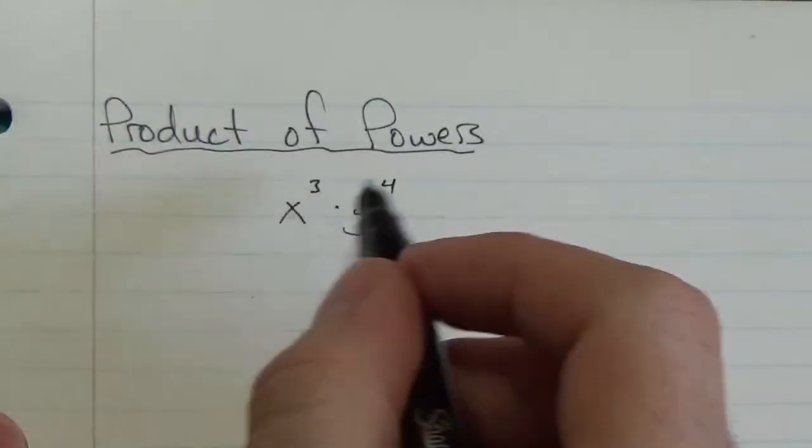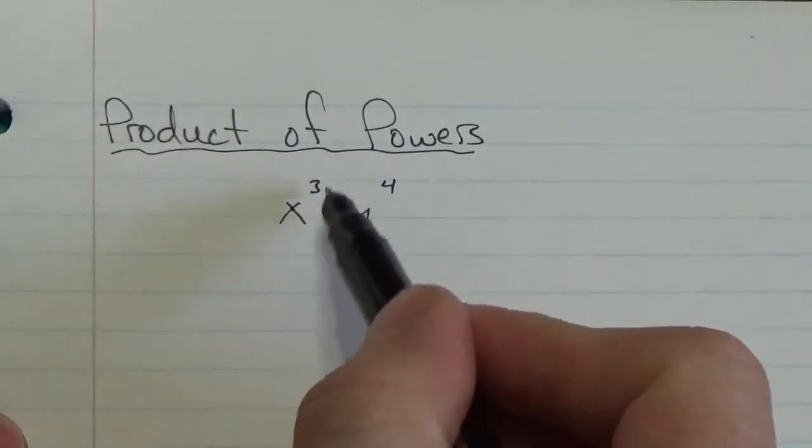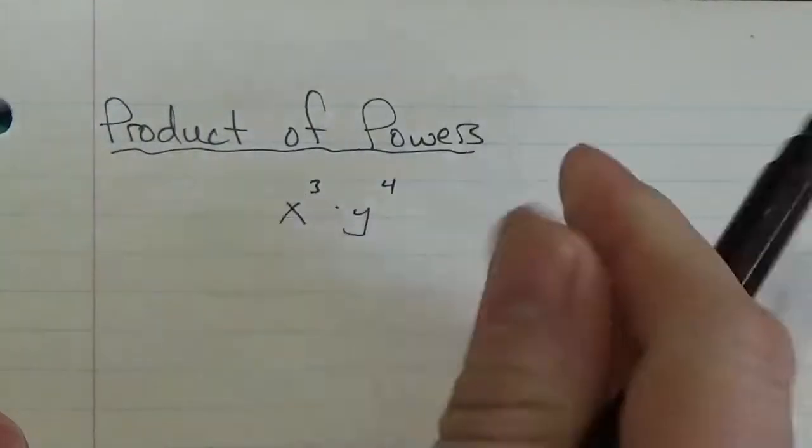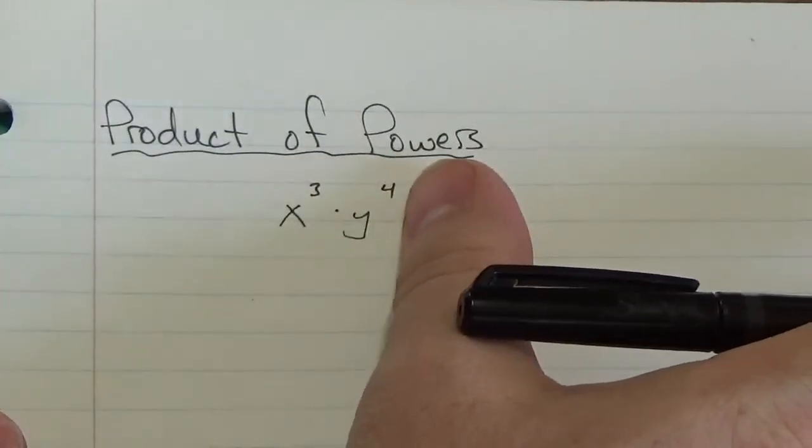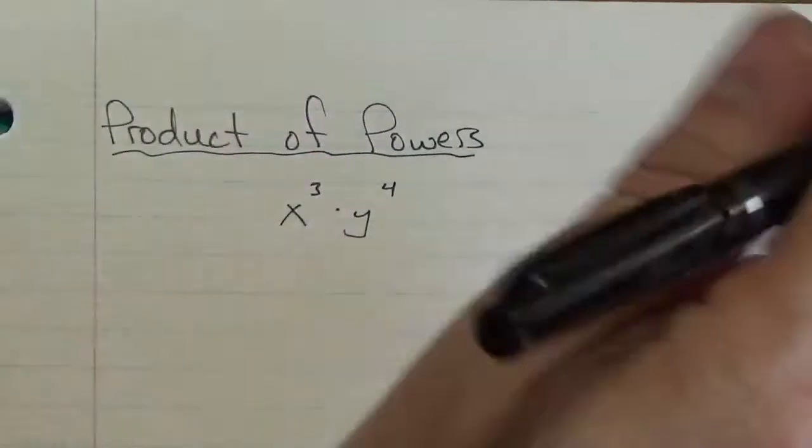Well, remember what the power means here. This means that I'm dealing with an expression here, right here, if I ignore that, that's got three x's as factors. And over here, this one here has got four y's as factors.